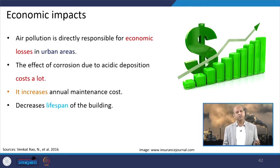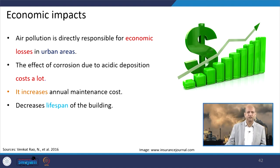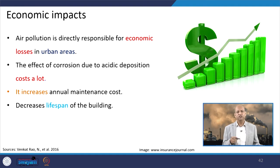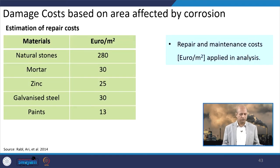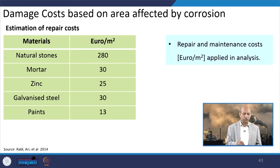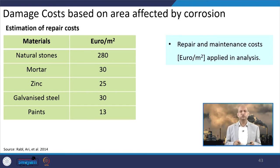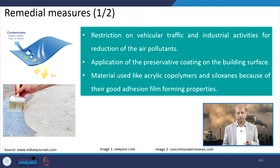Economic impacts arise because when buildings are affected, we have to repair them and their age also reduces, and structural components are also damaged. Maintenance cost is increased and lifespan of the building is decreased. Economic impacts are severe if air pollutants are not cleaned from the environment. The damage cost can be estimated by studies which provide tables showing natural stones, mortar, zinc, etc., and how much area is affected — depending upon the affected area, this repair cost can be estimated to calculate the cost of damage due to air pollutants and corrosion.